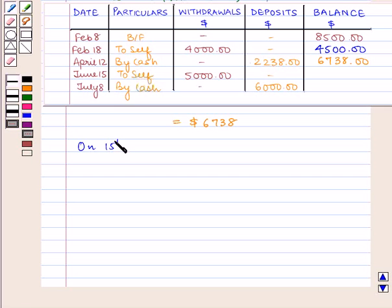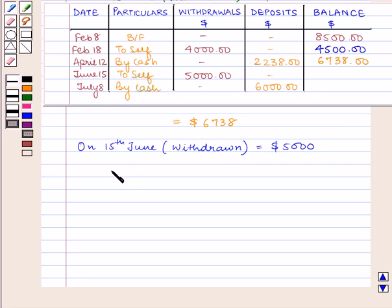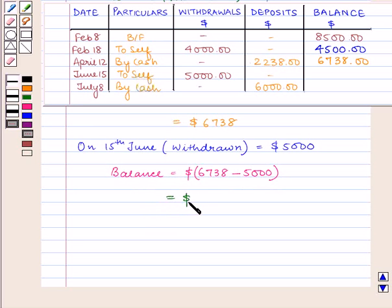On 15th June the amount withdrawn is 5000 dollars, so now the balance amount becomes 6738 dollars minus 5000 dollars, which is equal to 1738 dollars. So the next entry in the passbook is 1738 dollars on June 15th.